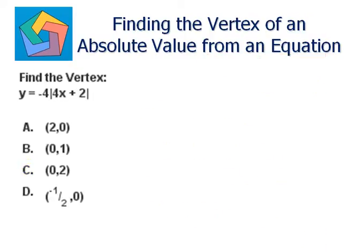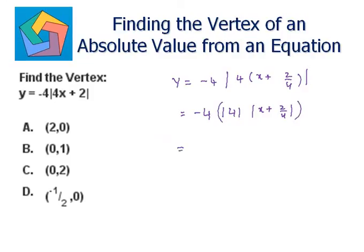Next problem. Find the vertex: y equals minus 4 times absolute of 4x plus 2. We can take 4 common inside the absolute: y equals minus 4 times absolute of 4 times the quantity x plus 2 over 4, which simplifies to x plus 1 over 2. Absolute of 4 is 4 only, so this becomes negative 4 times 4, giving us negative 16 times absolute of x plus 1 over 2.